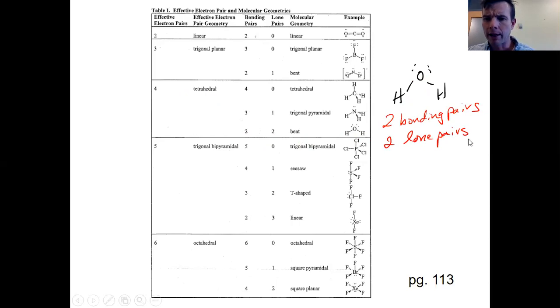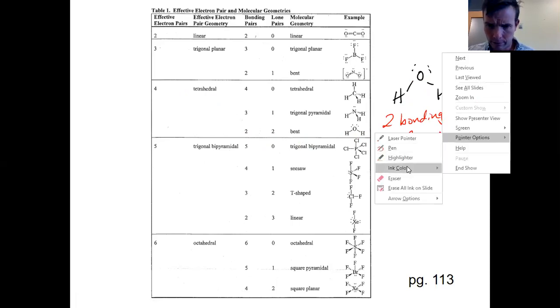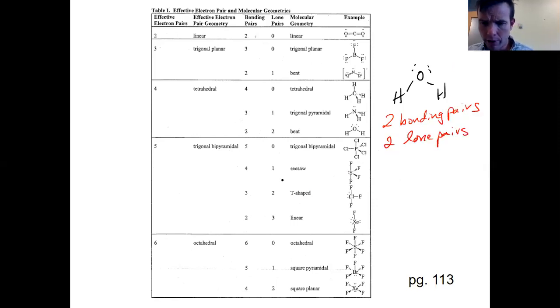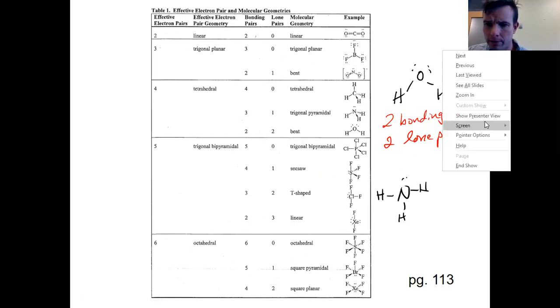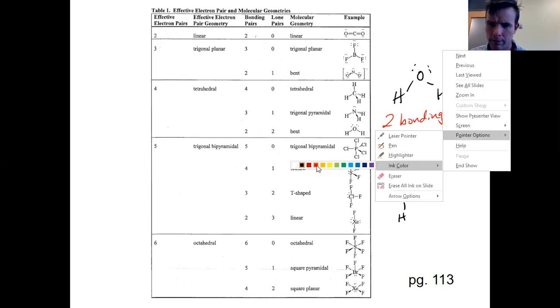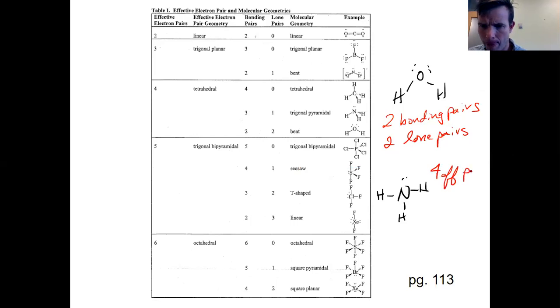If I compare that to something like ammonia. Ammonia has this structure. It also has four effective pairs. And if I look at this arrangement, it now has three bonding pairs and one lone pair.